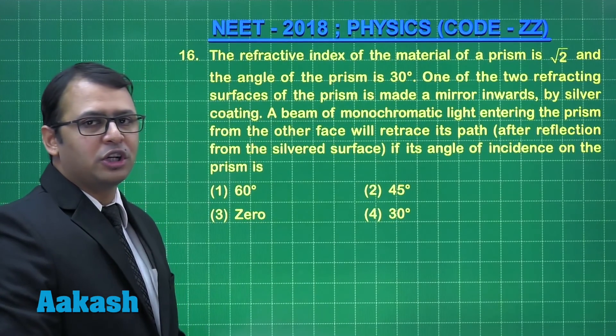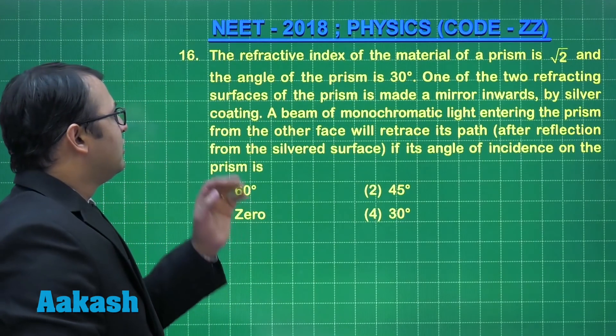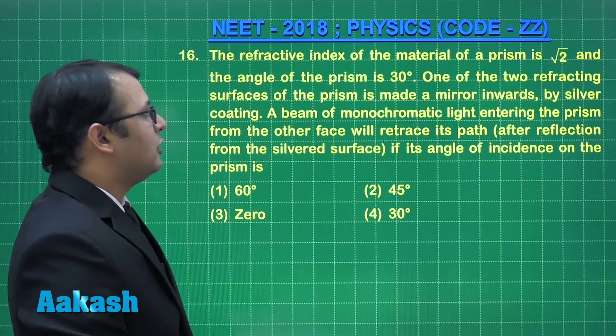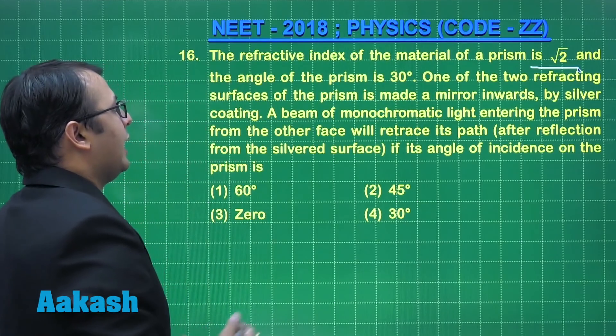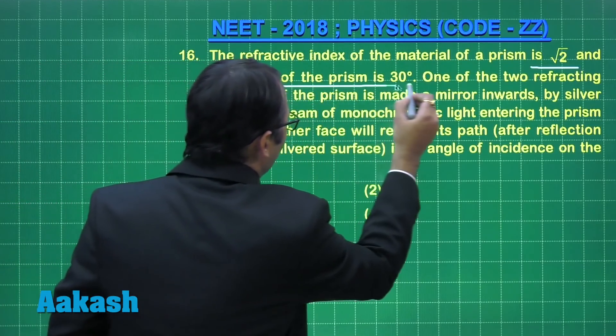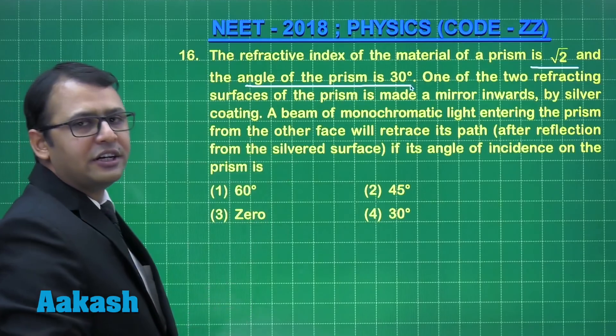Let's start with question number 16. The refractive index of material of prism is root 2. So we have refractive index root 2, and its angle of prism is 30 degrees.